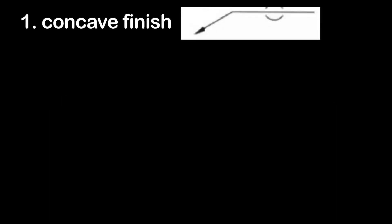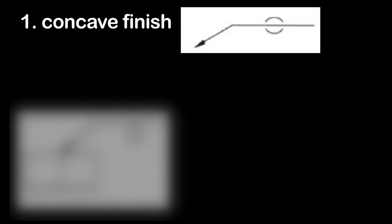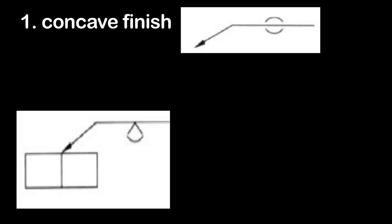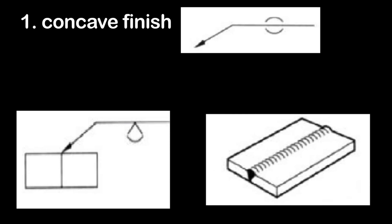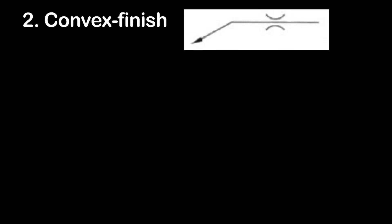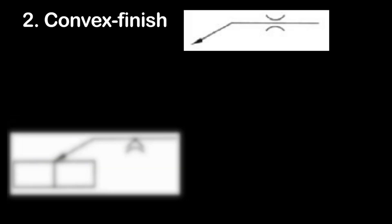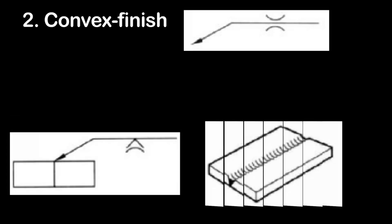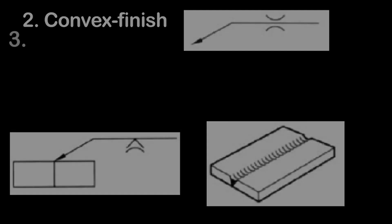Here first one is concave finish. Here the weld bead is above the parent metal. The second one is convex finish. Here the weld bead is below the parent metal.